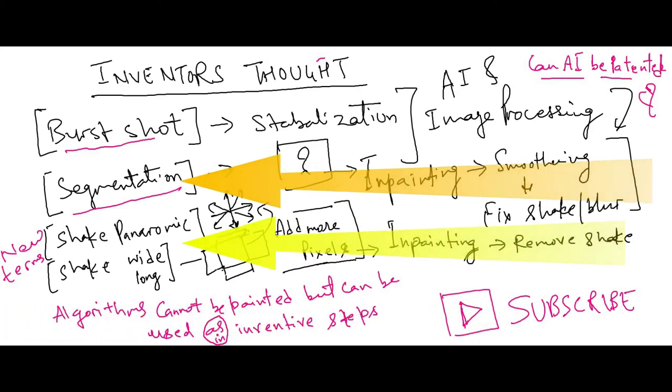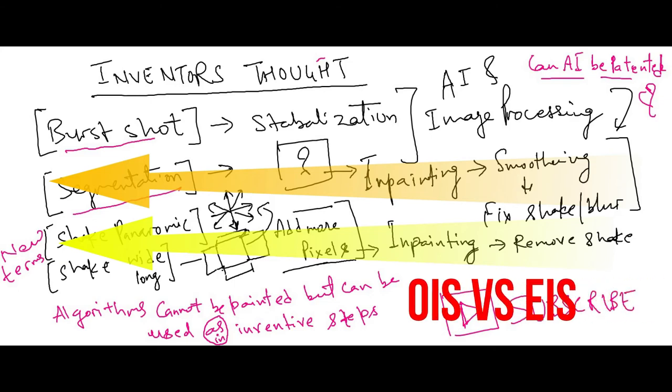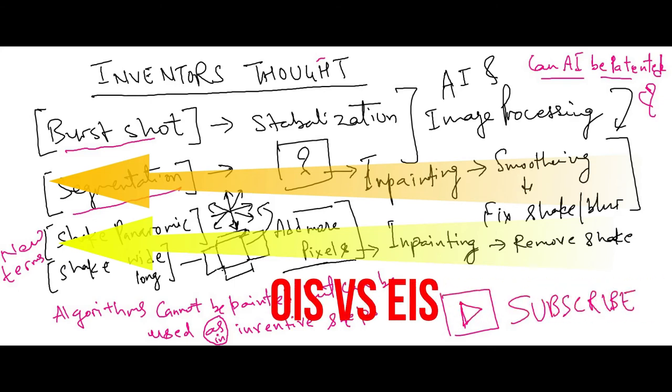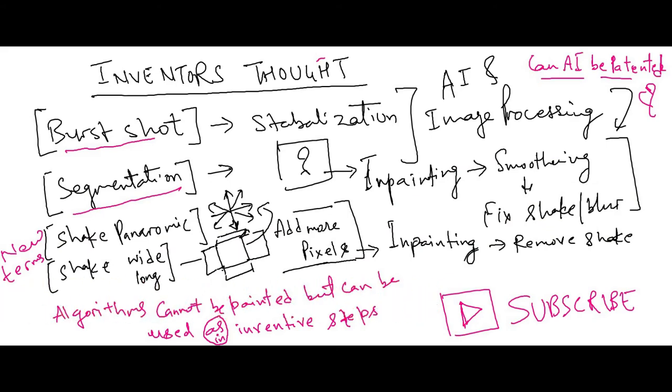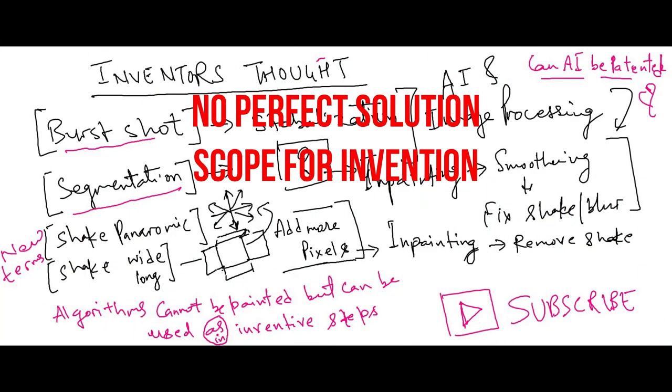There could be many more solutions with trade-offs. As image stabilization discussed earlier also have pros and cons. There is no perfect solution. Build inventive steps around pros and cons.